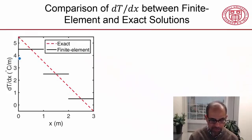This plot shows the comparison. On the vertical axis, I have the derivative of the temperature. On the horizontal axis, I have the distance along the bar. And the solid line is the finite element solution. The dashed line, as before, is the exact solution.